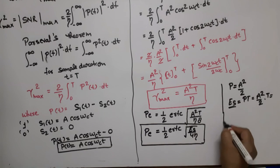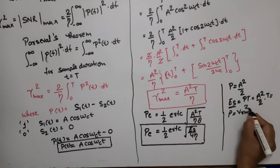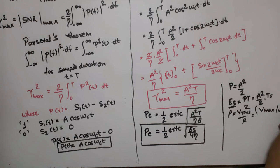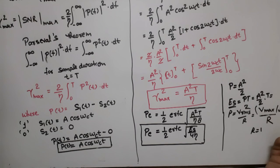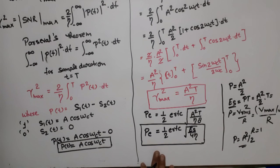To clarify, we calculated power as P equals Vrms² divided by R. Since Vrms equals V-max divided by root 2, and V-max is A with R taken as 1, we get P equals A²/2. Using this, we derived the final probability of error for ASK. Thank you so much — if you have any doubts related to this, please write them down in the comment section.